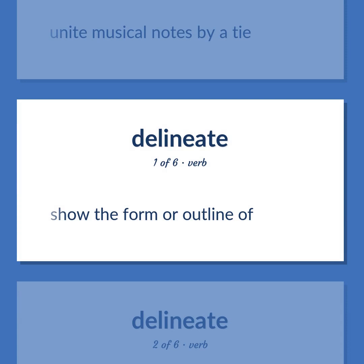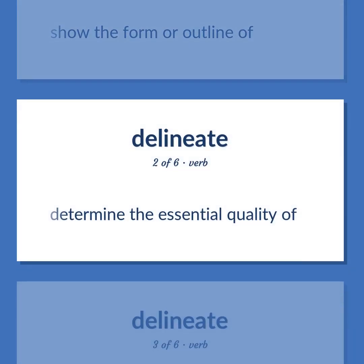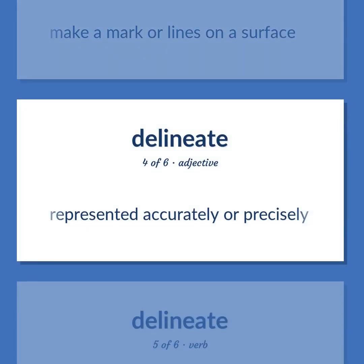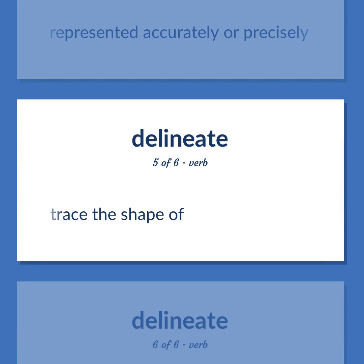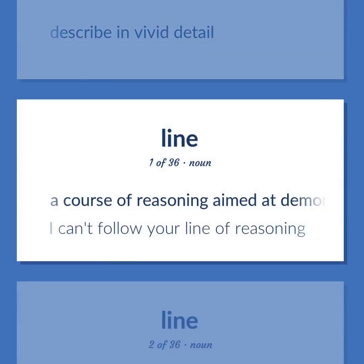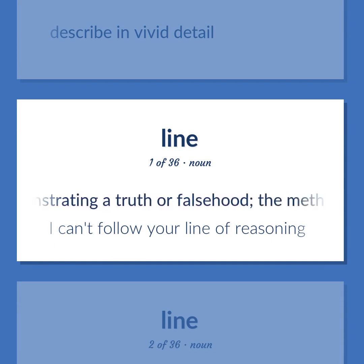Show the form or outline of. Determine the essential quality of. Make a mark or lines on a surface. Represent it accurately or precisely. Trace the shape of. Describe in vivid detail. A course of reasoning aimed at demonstrating a truth or falsehood — the methodical process of logical reasoning. I can't follow your line of reasoning.